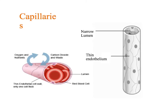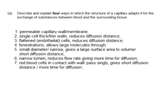Capillaries are where exchange happens, so you need to know how a capillary is adapted for exchange. The wall of the capillary - the endothelium - is really thin; it's one cell thick with squamous epithelium, so very flattened cells giving a very short diffusion pathway. You've also got a narrow lumen, which slows down the speed of blood flow so you've got more time for diffusion to take place. The fact that red blood cells are pressed right up against the epithelial wall also reduces the diffusion distance. There are also gaps between the epithelial cells, allowing tissue fluid to escape, which helps in the exchange process.